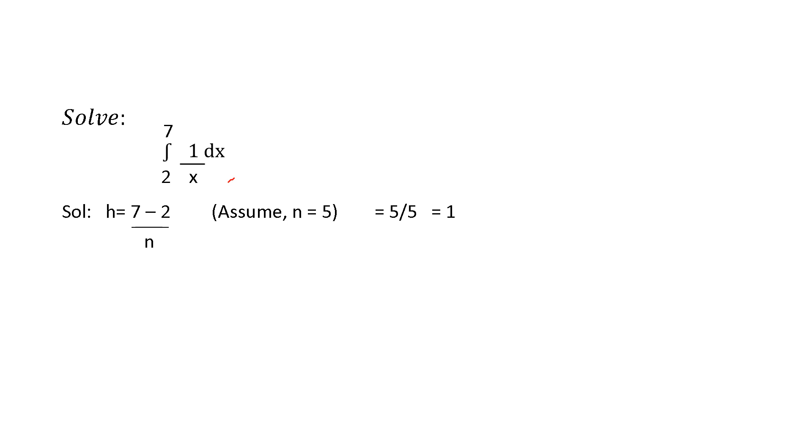In this case, I have assumed n as 5. So h equals b minus a by n. b is 7 and a is 2. 7 minus 2 by 5 equals 1. And this 1 is the interval or the difference between the x values.